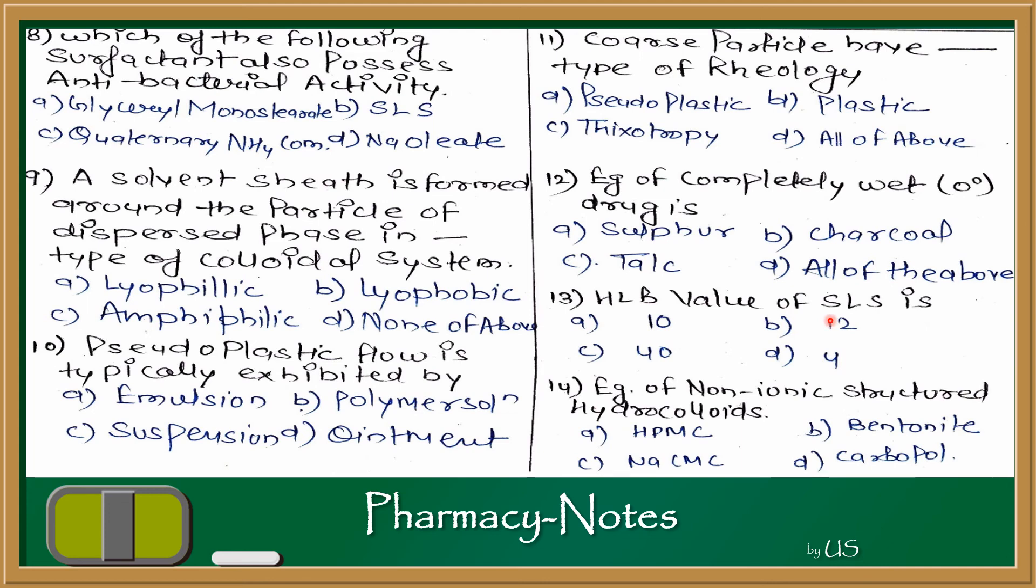The last question is: Example of non-ionic structured hydrocolloid. Which one is non-ionic hydrocolloid? Let's talk about HPMC, sodium CMC, carbopol, bentonite. You know bentonite is clay. While sodium CMC and carbopol are other types of structured hydrocolloids, HPMC is non-ionic structured hydrocolloid. So this answer is HPMC - Hydroxypropyl Methylcellulose.